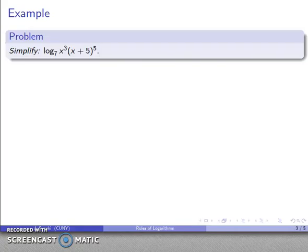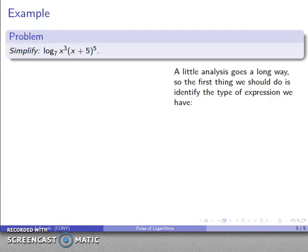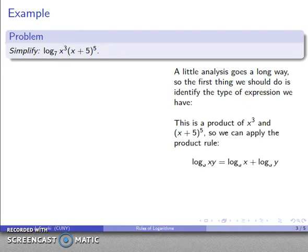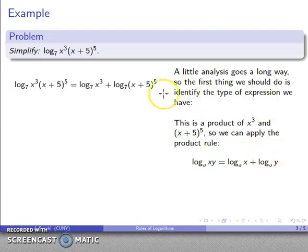For example, let's take log to base 7 of x³ times (x+5)⁵. A little analysis goes a long way — first, determine what type of expression the argument is. That's a product of x to the third and (x+5) to the fifth. Since it's a product, I should apply the product rule: the log of a product is the sum of the individual logs.